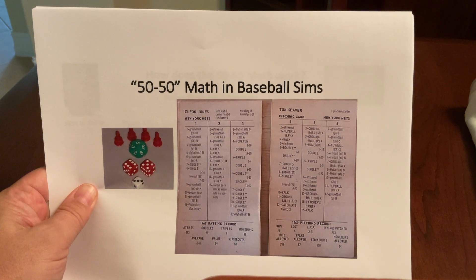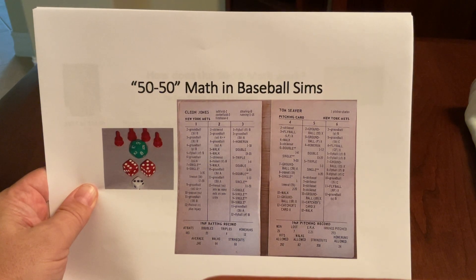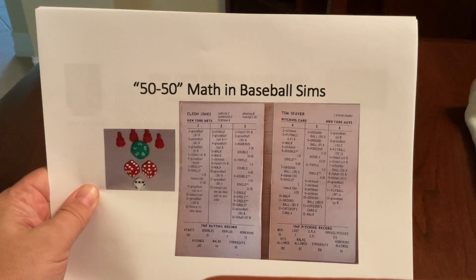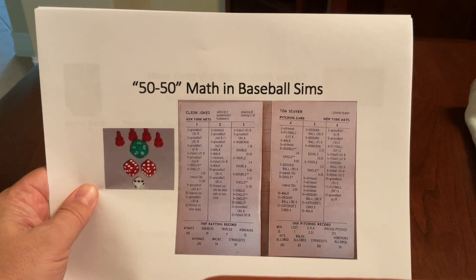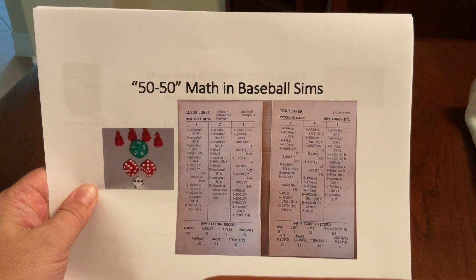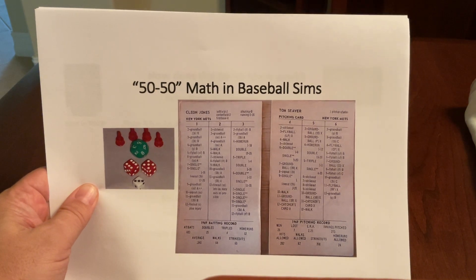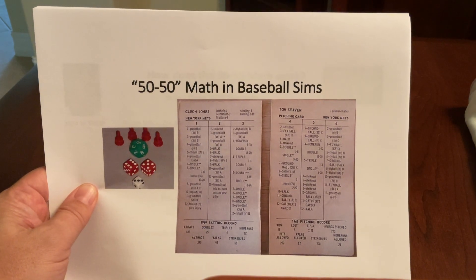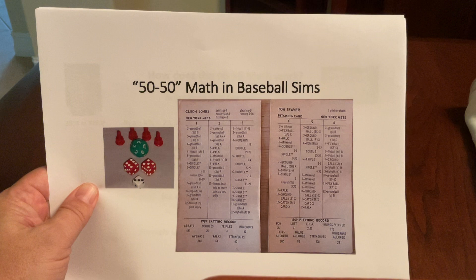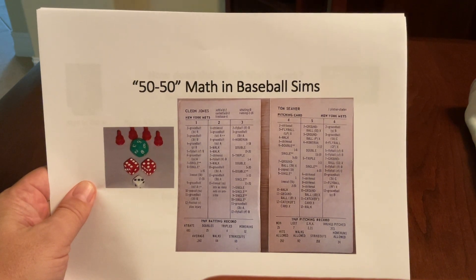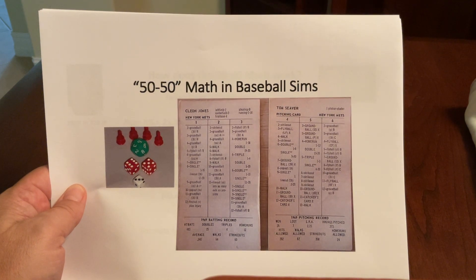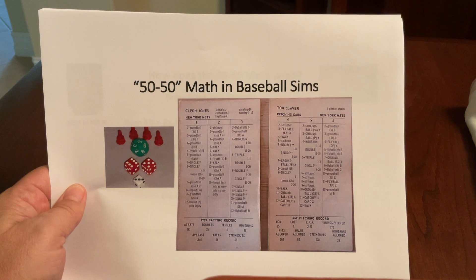I've put together cards for a lot of different sims. I haven't actually put together cards for Strat-O-Matic, although I have my own sim that I came up with over 40 years ago, and some of the math is the same as Strat math. But when you're building the cards, the math that you need to employ is not always immediately obvious. The main purpose of this video is to explain how you do that math, and then I'll also talk about some of the weaknesses of the 50-50 system.